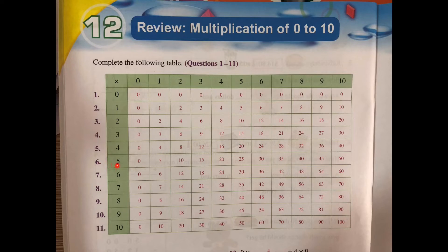For 5 times 9 you have 45, and if you flip the two numbers, 9 times 5, you also have 45.